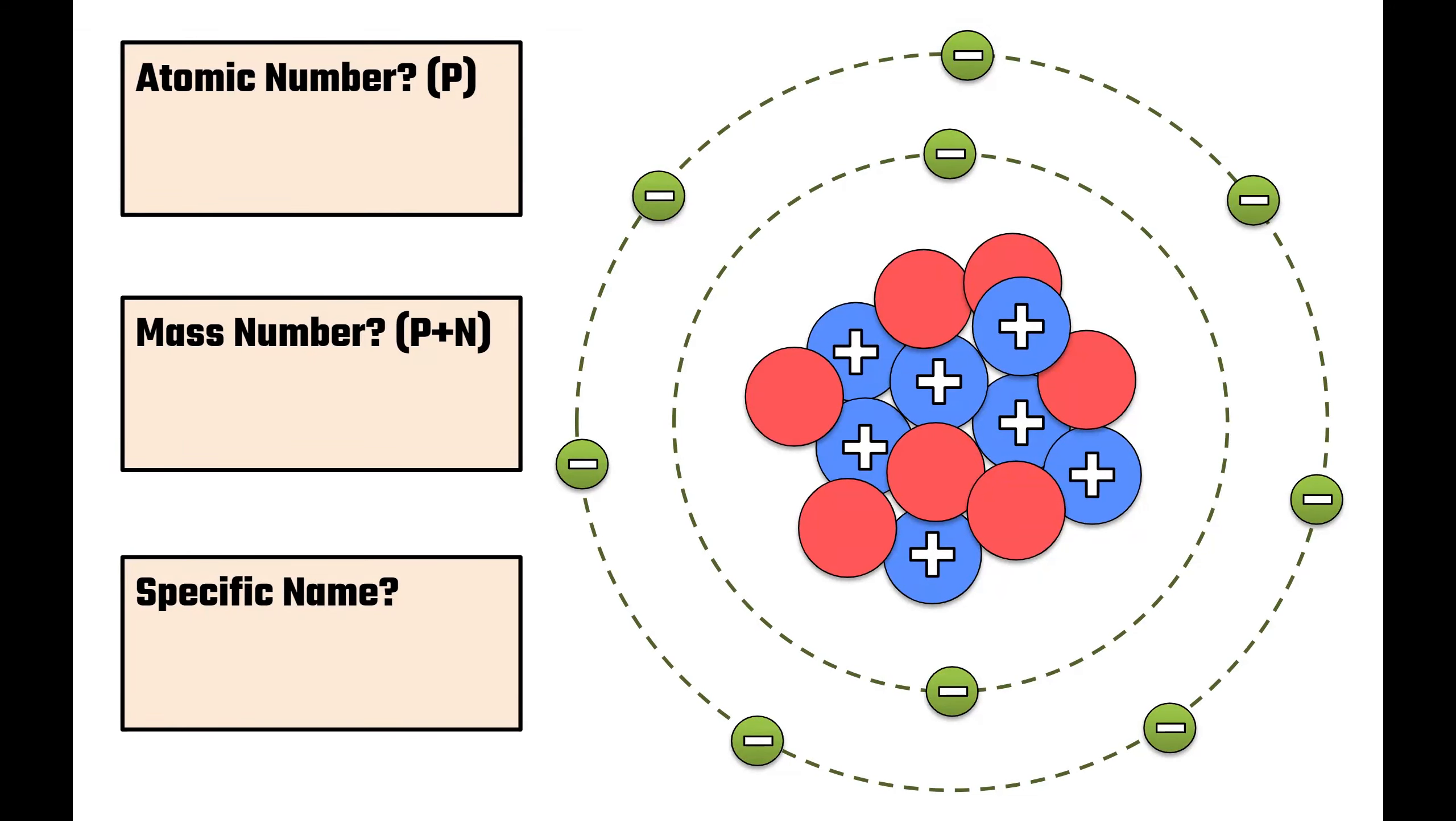So here's our final question for today, and now that we've learned all this stuff, we should be able to answer all these questions pretty confidently. First, as we look at this atom on the right, we could ask, what is its atomic number? Reminder that atomic number means the amount of protons. Looking at the diagram, I count one, two, three, four, five, six, seven protons, so the atomic number of this atom is seven.